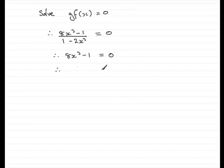If I add 1 to both sides now, I have 8x cubed equals 1, and then dividing by 8 gives me x cubed equals 1 eighth.